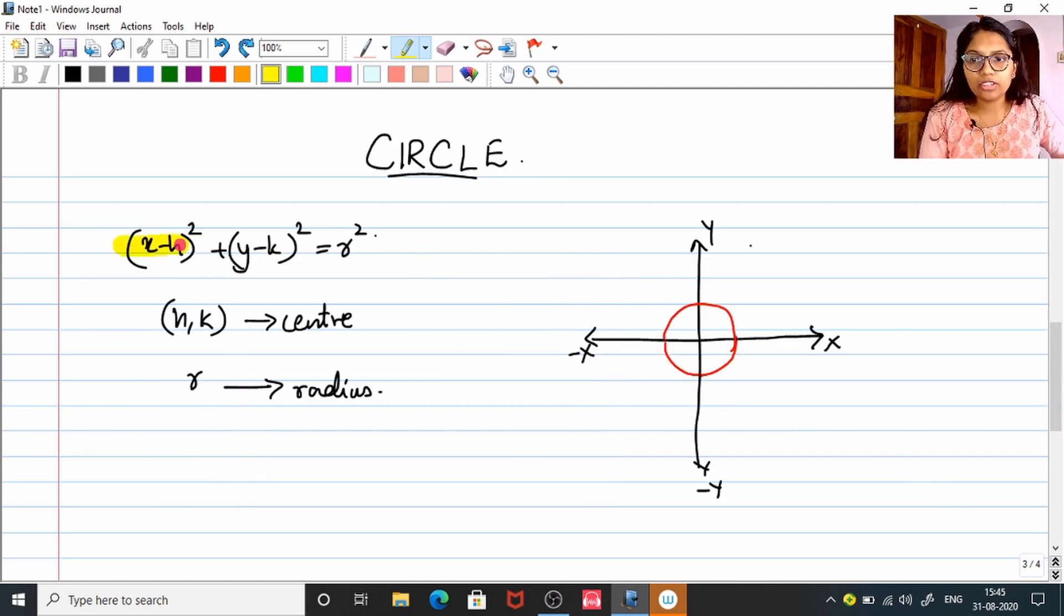Moving on to circle. This is your general expression for circle: (x - h)² + (y - k)² = r², where (h, k) is the coordinate for your center of the circle, and r is the radius.